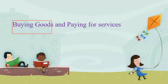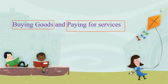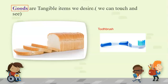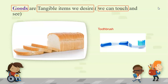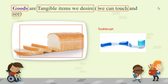Let's learn about buying goods and paying for services. Goods are touchable items we desire. For goods, we can touch them and we can also see them. For example, in these images you can see bread and a toothbrush. These two are goods because we can see them and we can touch them.